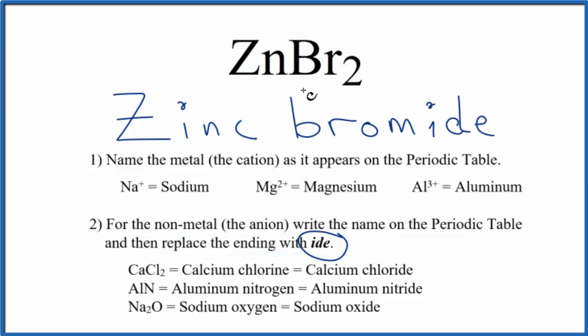So the name for ZnBr2 is zinc bromide. Note that because zinc and bromine, the electronegativity difference, isn't as large as other ionic compounds, there's a lot of covalent character to this compound. So sometimes you'll see this name as zinc dibromide.